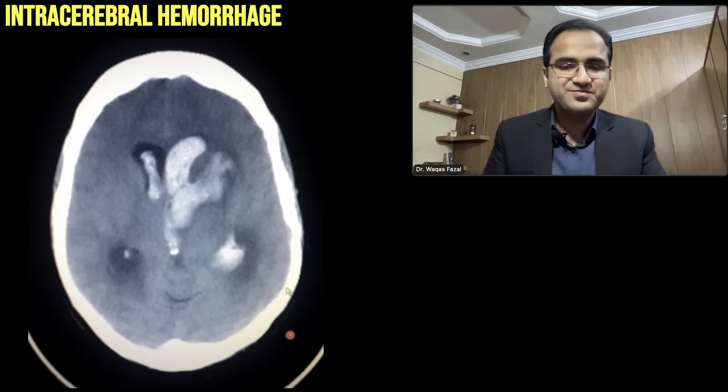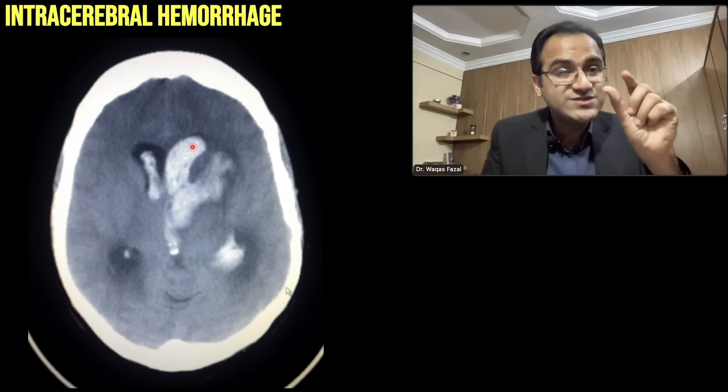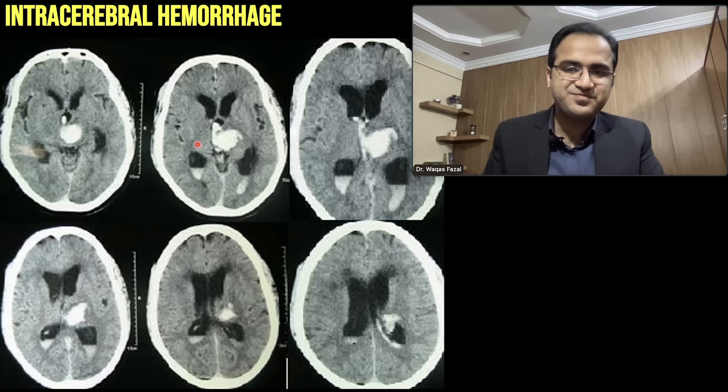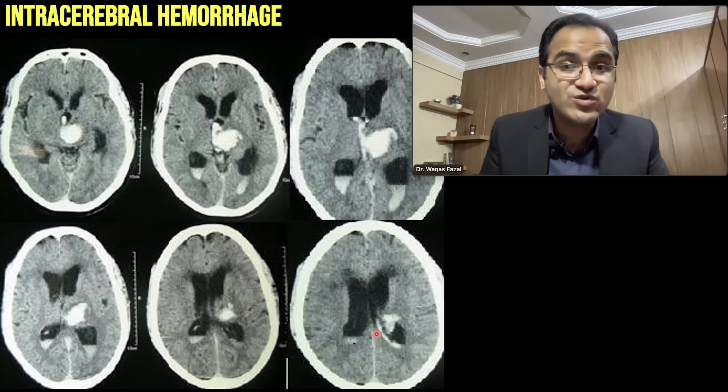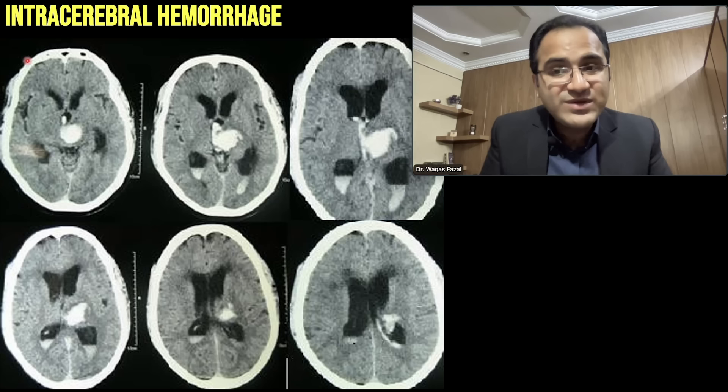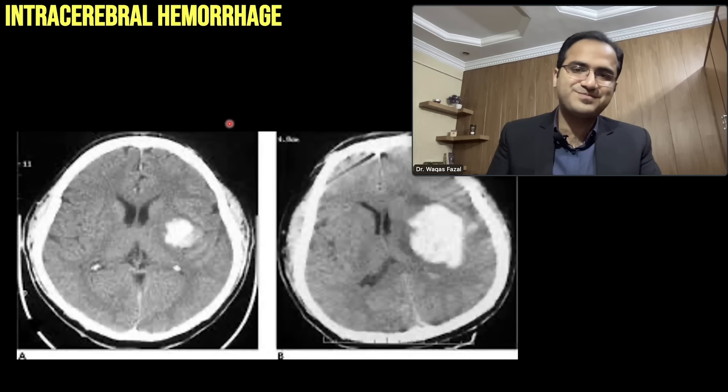On a CT without contrast, blood appears white. This picture shows a white area representing blood — it is lying within the brain, confirming intracerebral hemorrhage. This is the area where the basal ganglia, putamen, and thalamus are located.